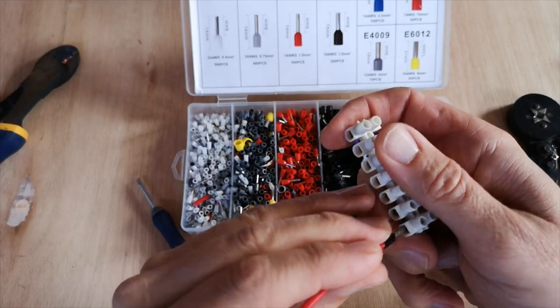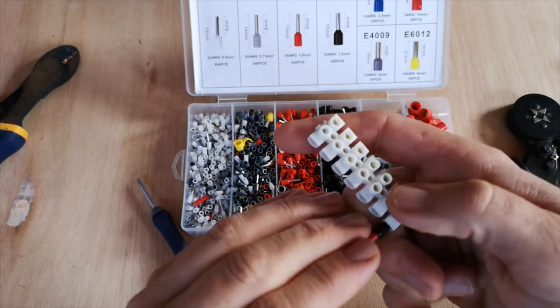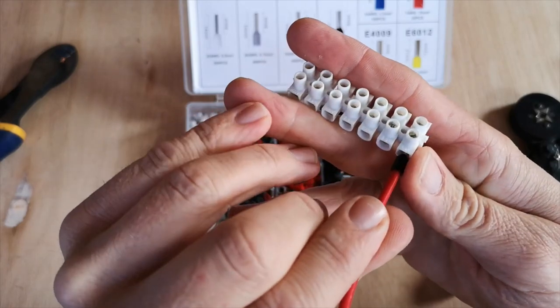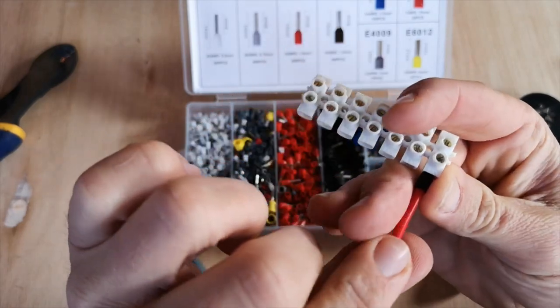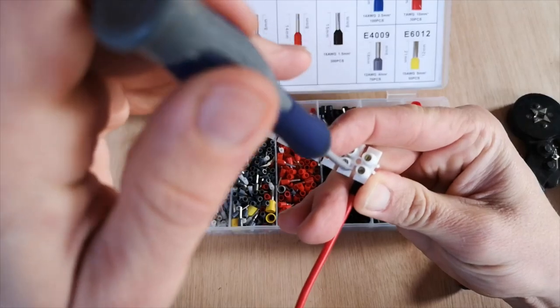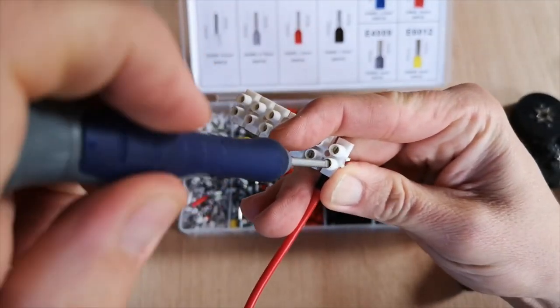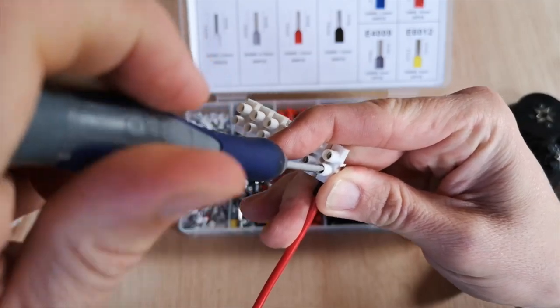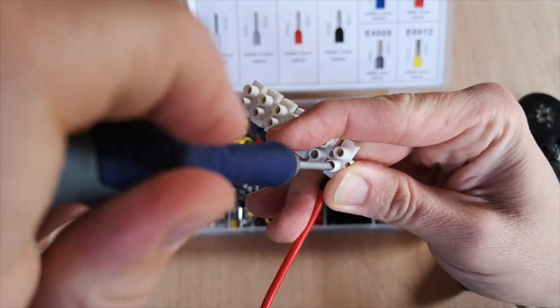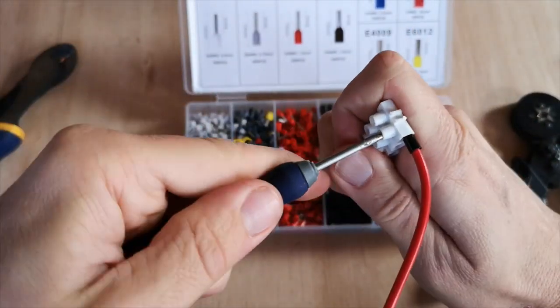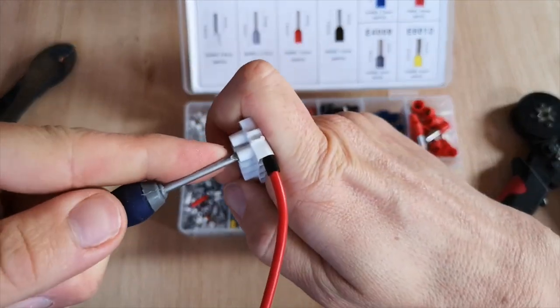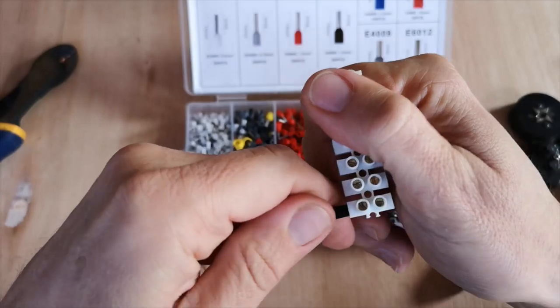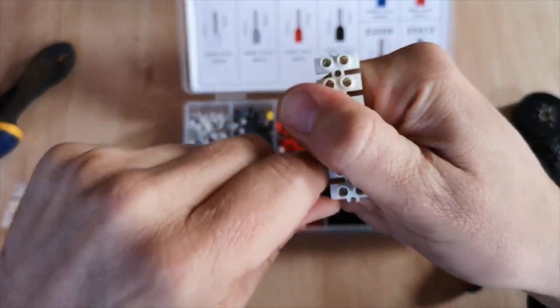Now we're going to put in the ferrule crimp and tighten down onto that with the screw terminal from the chop block. Tighten down as before. Test our connection. It's good and strong.